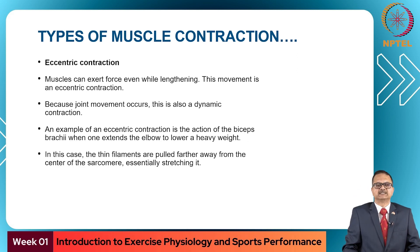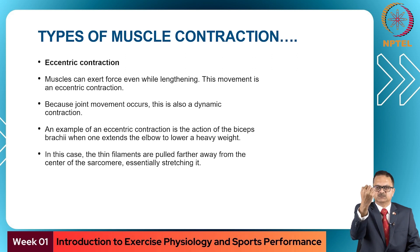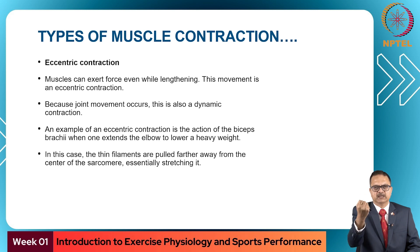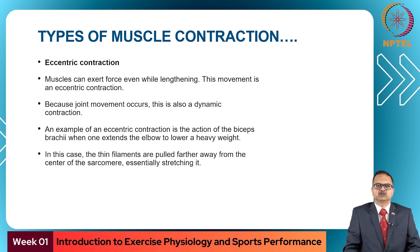Muscles can exert force even while lengthening — this is called eccentric contraction. Because joint movement occurs, it is also called a dynamic contraction. For example, if holding a heavy weight that exceeds the biceps' capacity, the muscle will slowly lengthen while still producing force. The thin filaments are pulled farther away from the center of the sarcomere, essentially stretching it while producing muscle force.